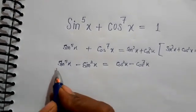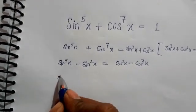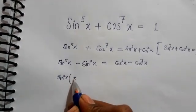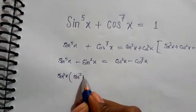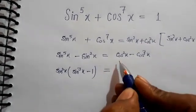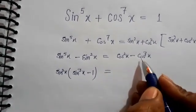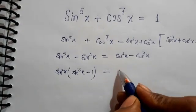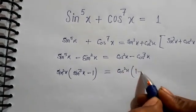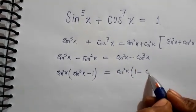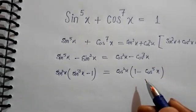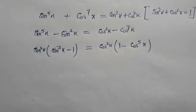I can take sin²x as common, giving sin²x(sin³x - 1), and here I'm taking cos²x as common, giving cos²x(1 - cos⁵x). We are knowing that...